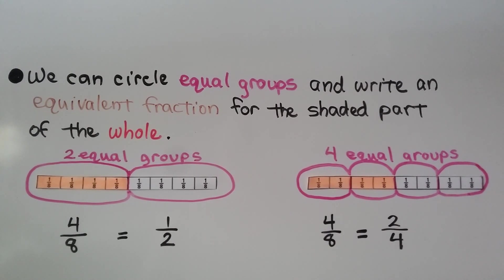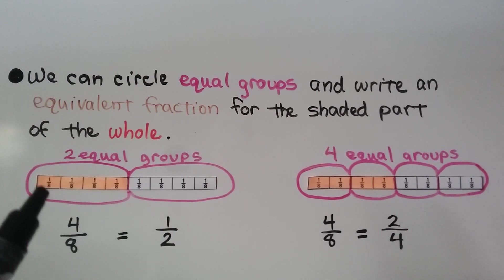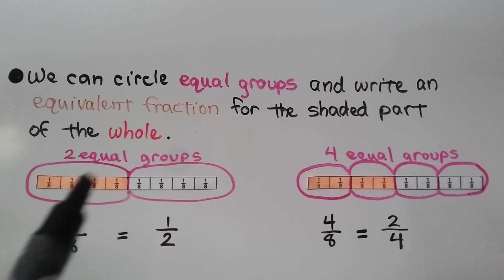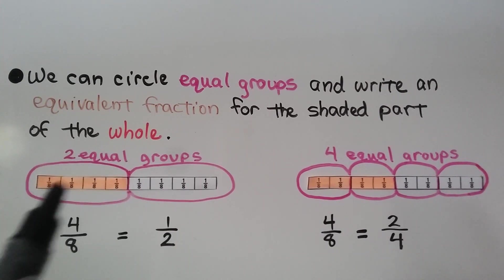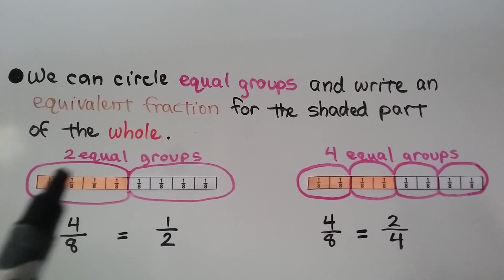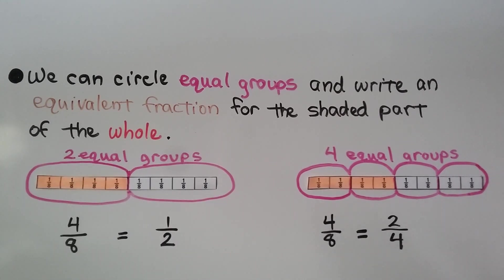We can circle equal groups and write an equivalent fraction for the shaded part of the whole. Here we have four one-eighth pieces, so that's four-eighths. If we make it into two equal groups, then we could say this four-eighths is half of this fraction strip. Four-eighths is equal to one-half.